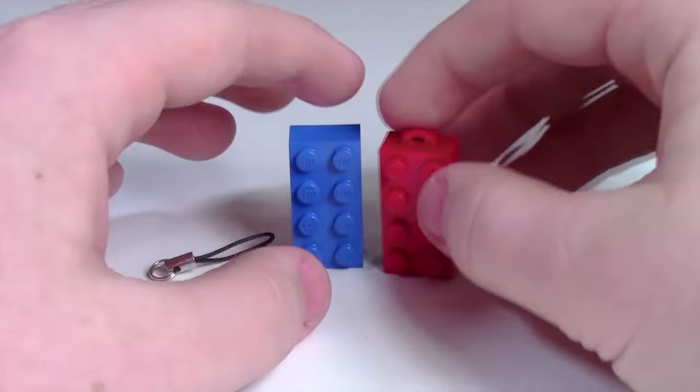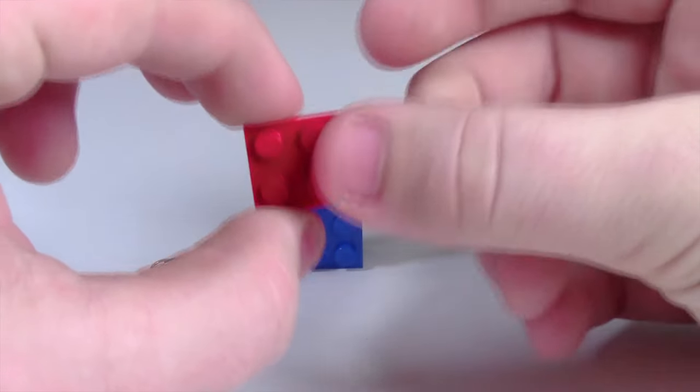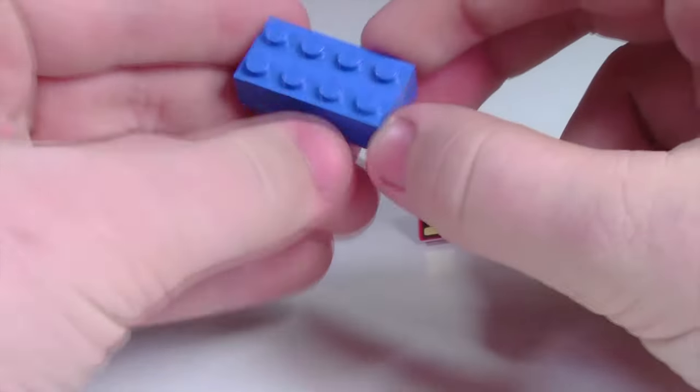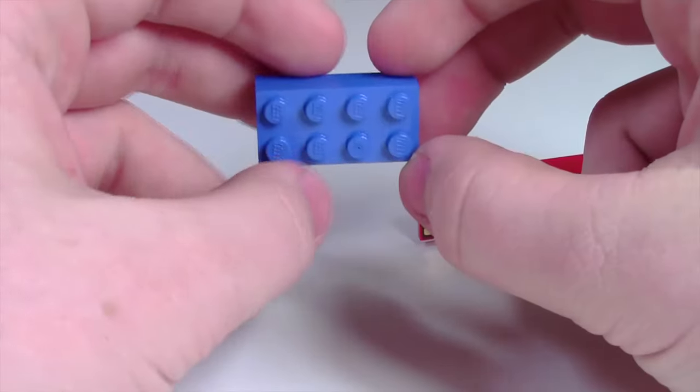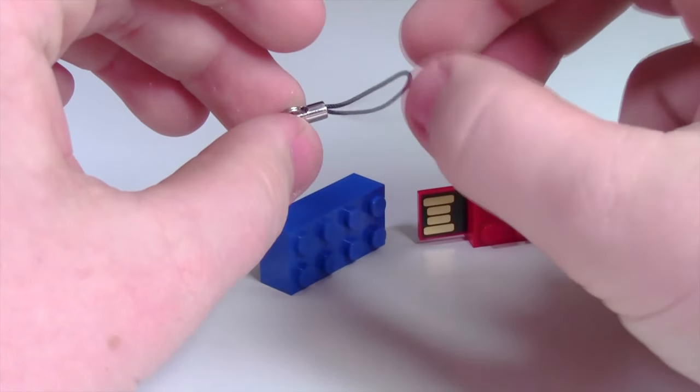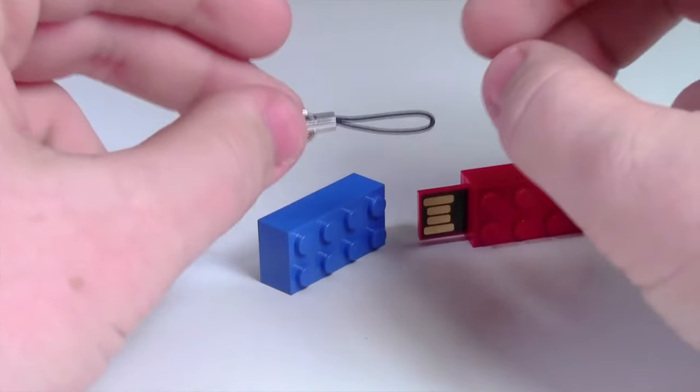So here's what came in the package. As you can see, first up is the red USB stick. We have just a regular blue LEGO brick that is a true LEGO brick, as well as this little lanyard thing, but it's very, very short. I'm not sure why it's so short.